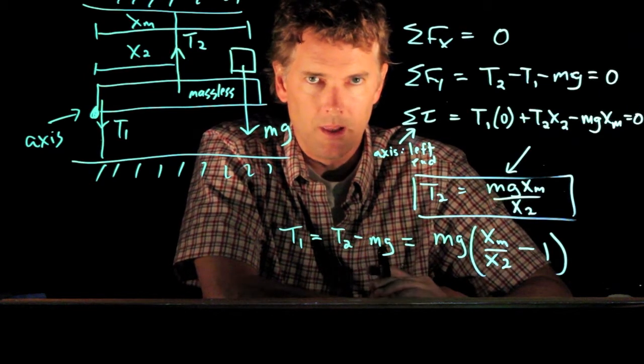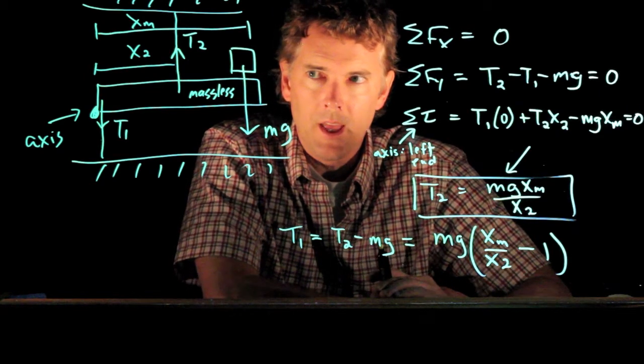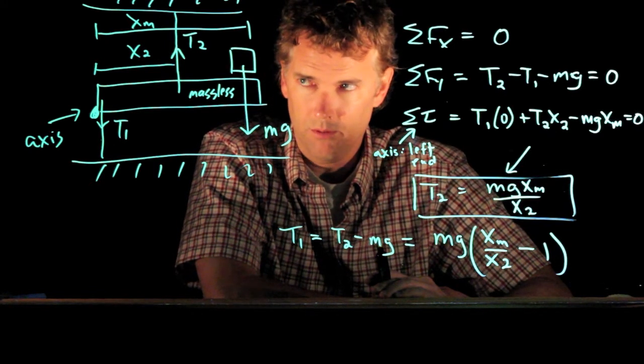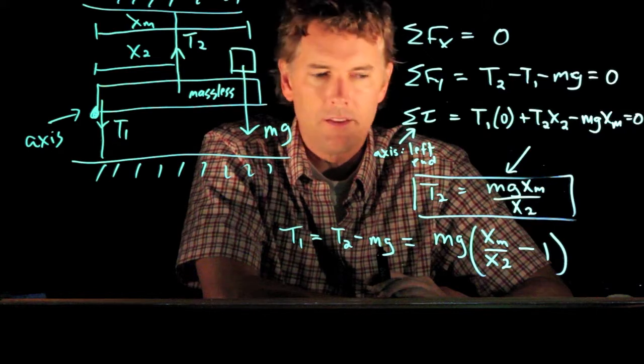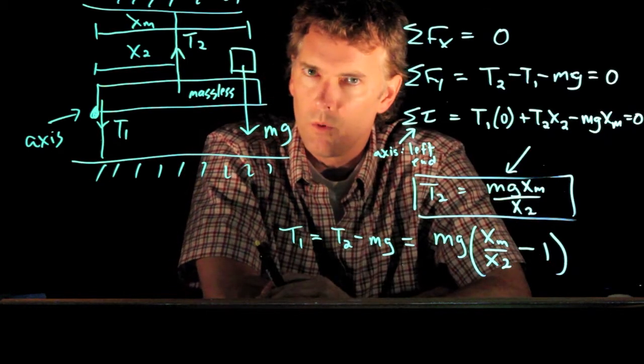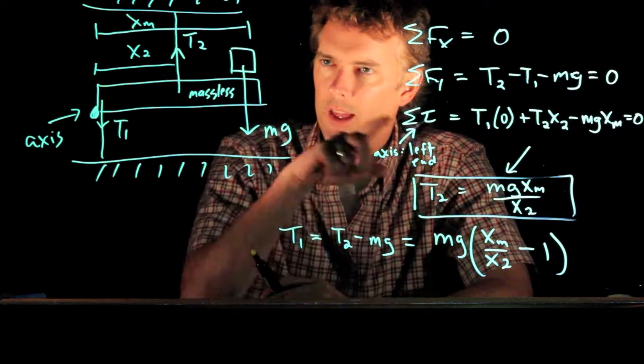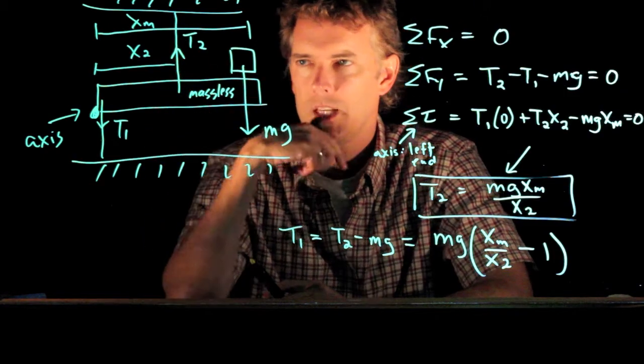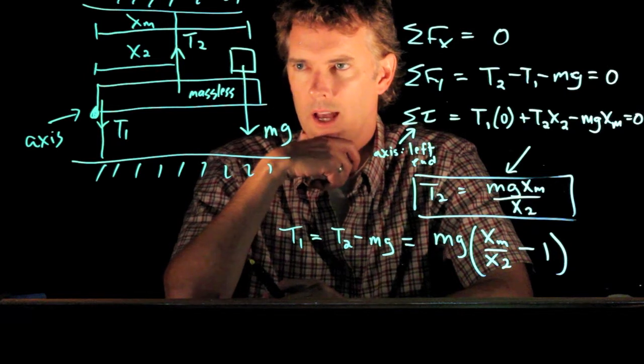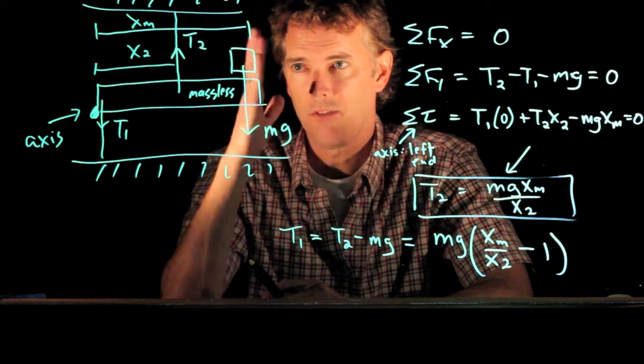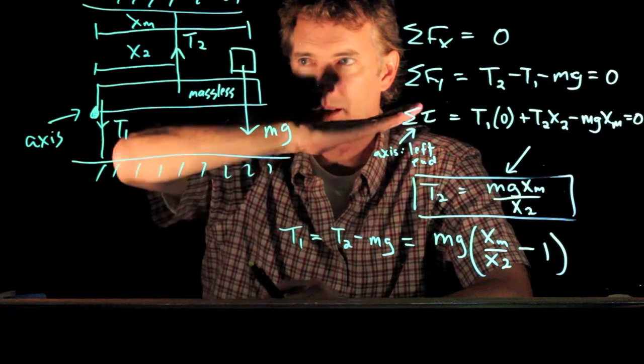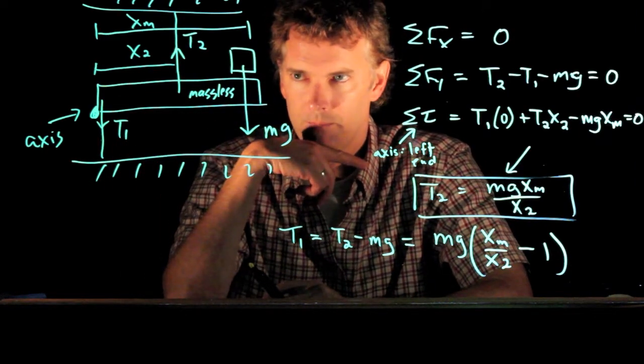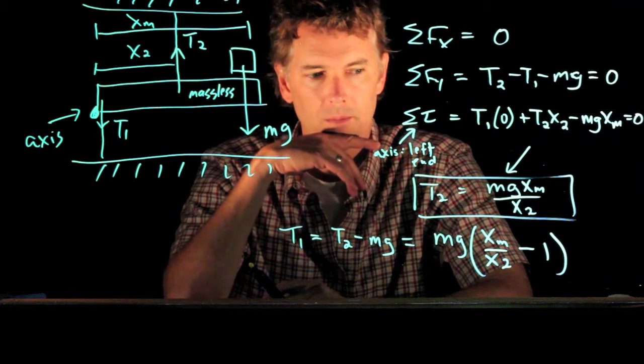And now you can look at the limits. So if xm was equal to x2, then it says that T1 would be zero. And so that's the condition where we moved our mass right to where the cable T2 is attached. And if that is indeed the case, then T2 is holding the whole thing up. It's perfectly balanced. And you need zero tension in T1. Okay. So that limit makes sense.